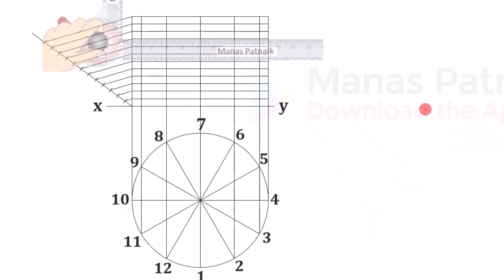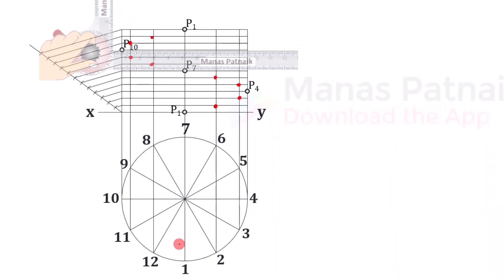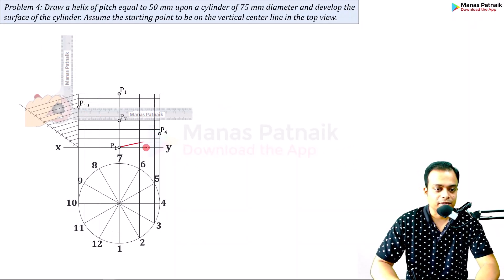Now create the helix — this is something I've already taught in my other lectures on spiral and helix curves, available on YouTube and my application. The first point is p1, then p2, p3, p4, p5, p6, p7, p8, p9, p10, p11, p12, and the final point one again right at the top. This way you can create the helix — solid portion, hidden portion, solid portion. Helix created.